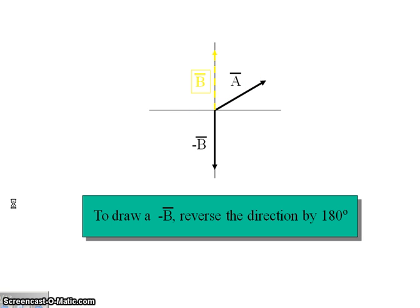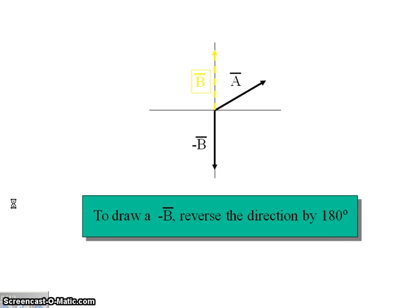How do you subtract? Well, you have to make a negative B. B was originally pointed upward like this. To make a negative B, you just add 180 degrees. So in other words, if I had a B of 90, 90 plus 180 equals 270 degrees. So there's a negative B. Negative B points directly in the opposite direction.